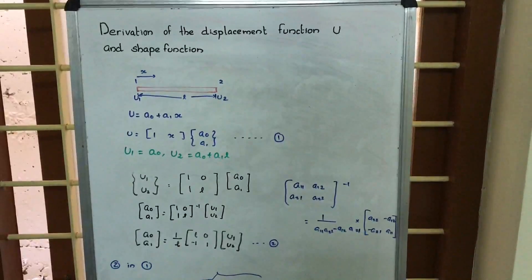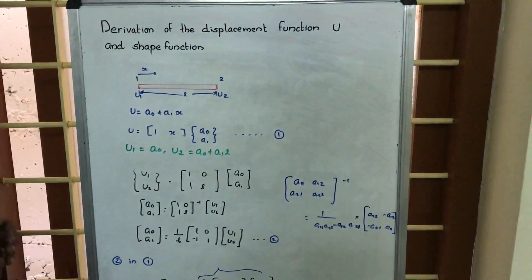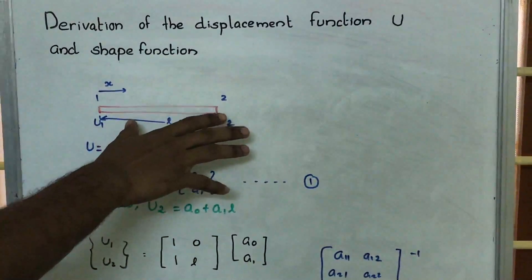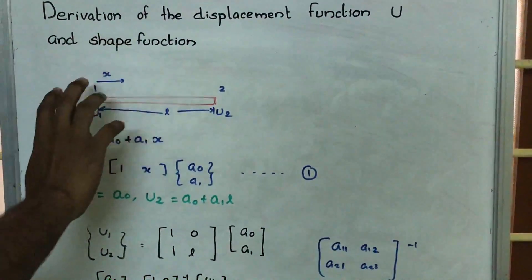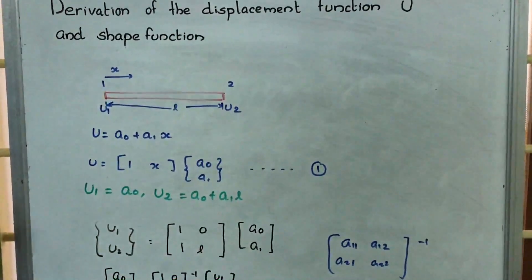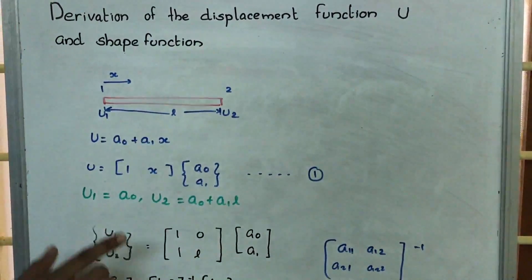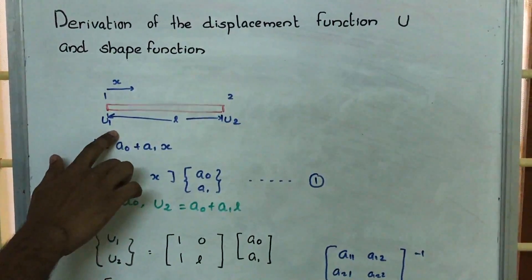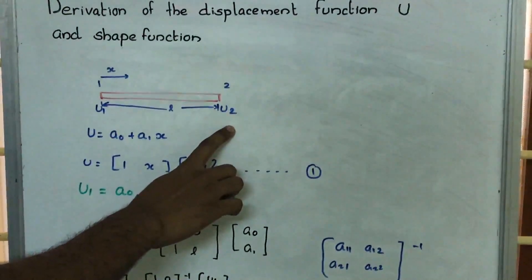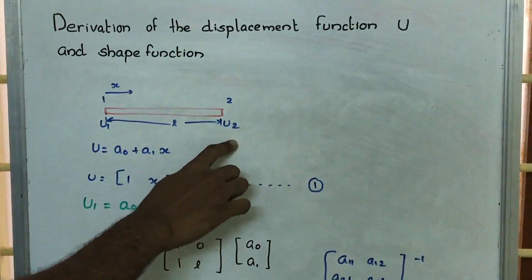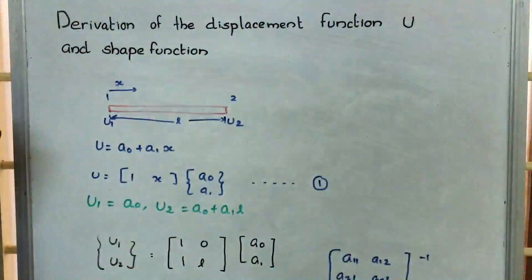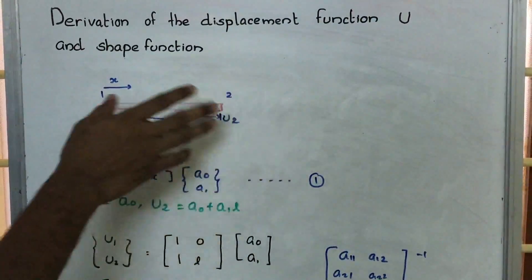Here we are going to derive the displacement function u and shape function for a beam. We are considering this beam as an element, having two nodes 1 and 2. The displacement at node 1 is represented as u1 and at node 2 as u2. These u1 and u2 can also be considered as the boundary conditions. The length of this beam is L and we are considering the x direction along the beam.